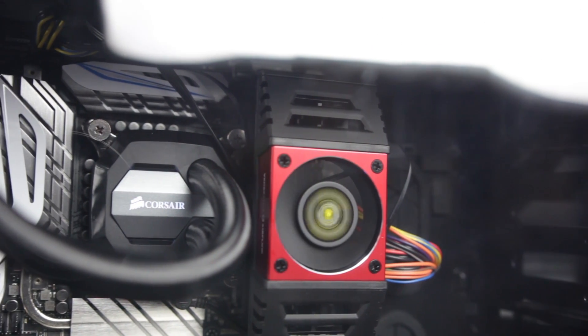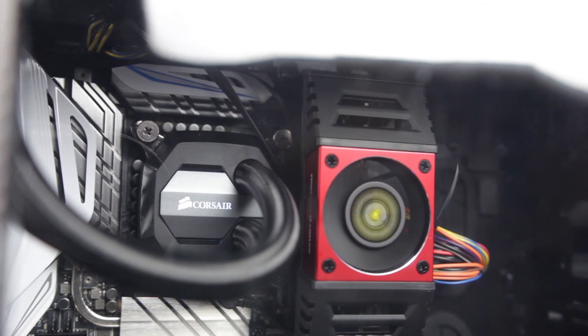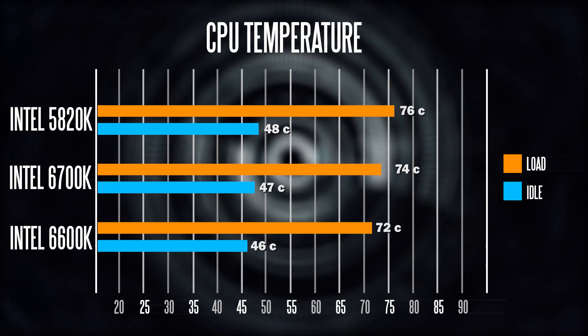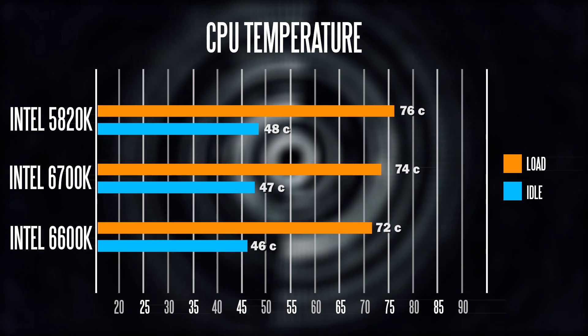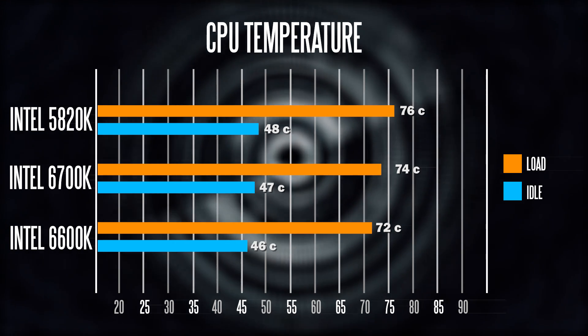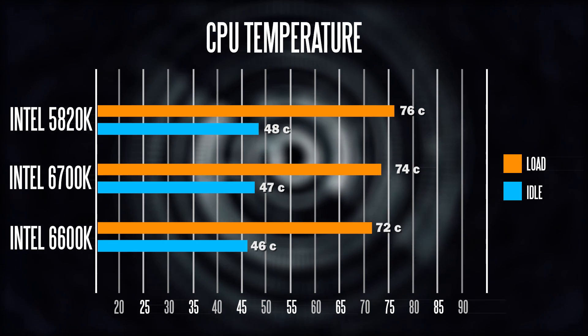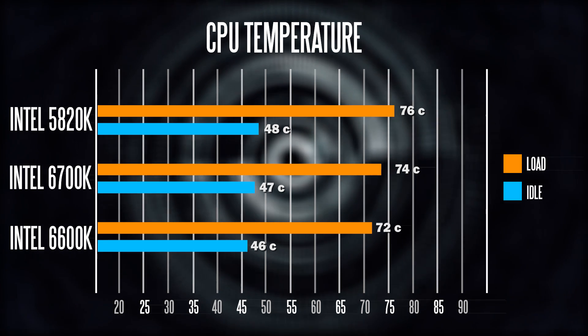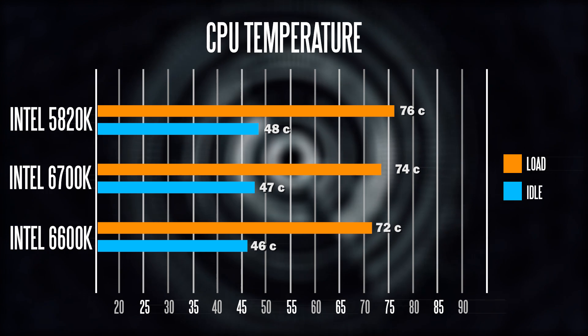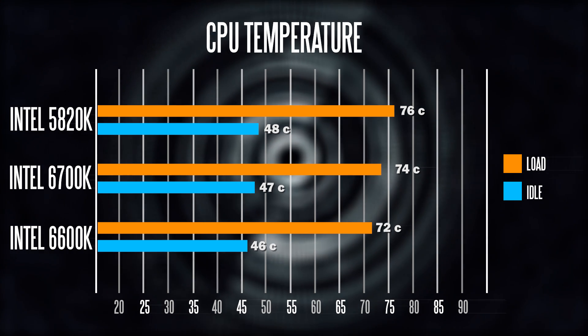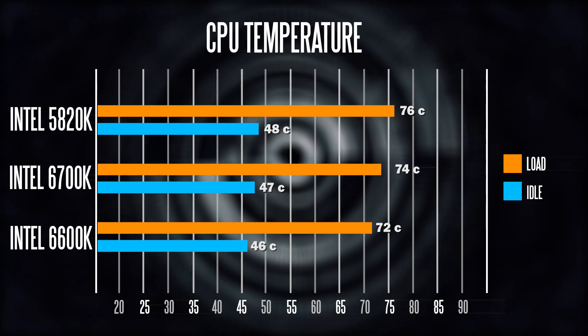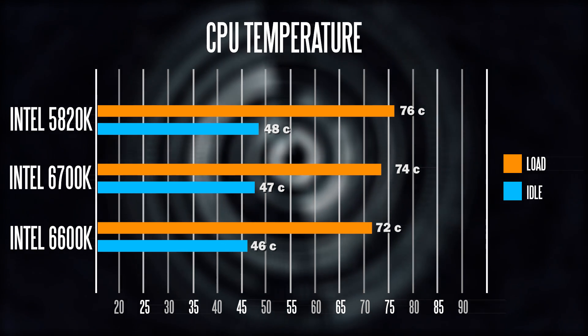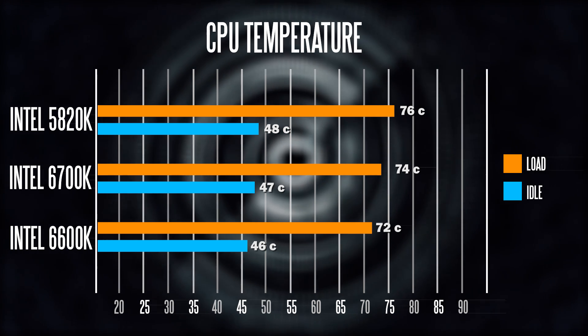Now let's talk about the temperatures of all three CPUs, both on idle and on load. Keep in mind the idle temps are based on our overclock, so they'll run a little cooler at stock frequencies, but they're pretty safe at the overclock levels we've achieved. At 100% load using Prime 95 for about 15 minutes, the 5820K hit about 76°C, versus 74°C on the 6700K, and about 72°C on the 6600K. The 6-core got the hottest, the 6700K is at a safe level, and we probably have a little more headroom for overclocking on the 6600K — that Core i5 could be a real winner for overclocking.